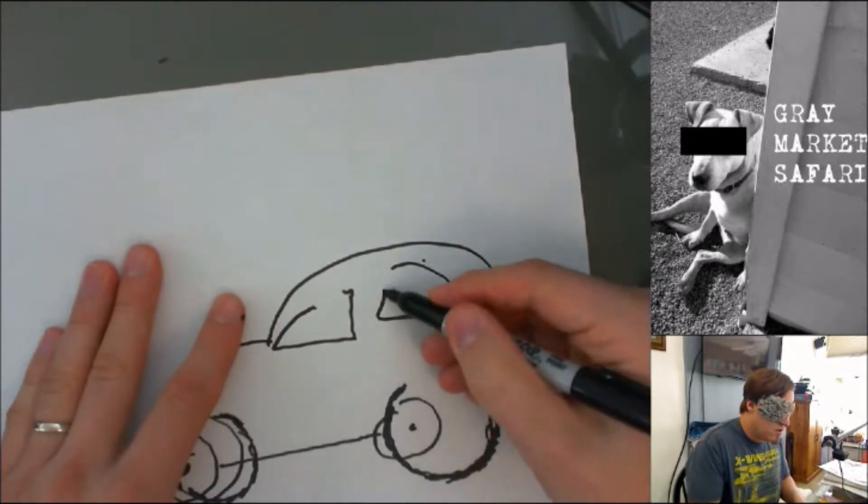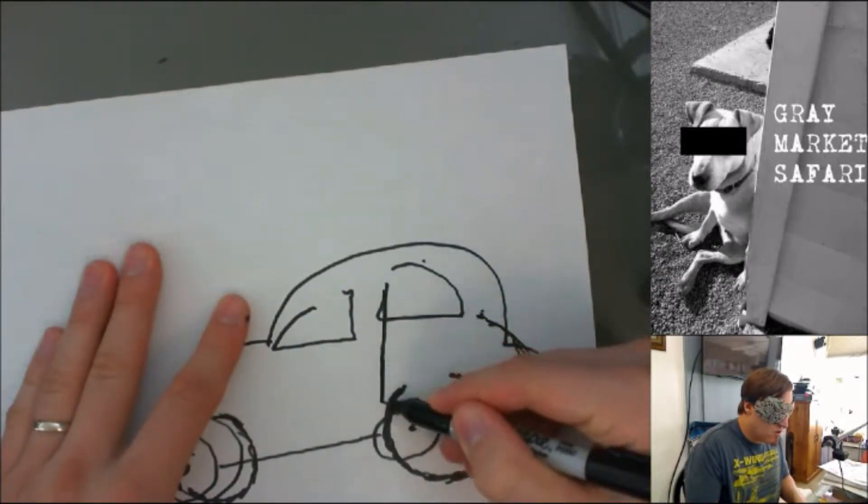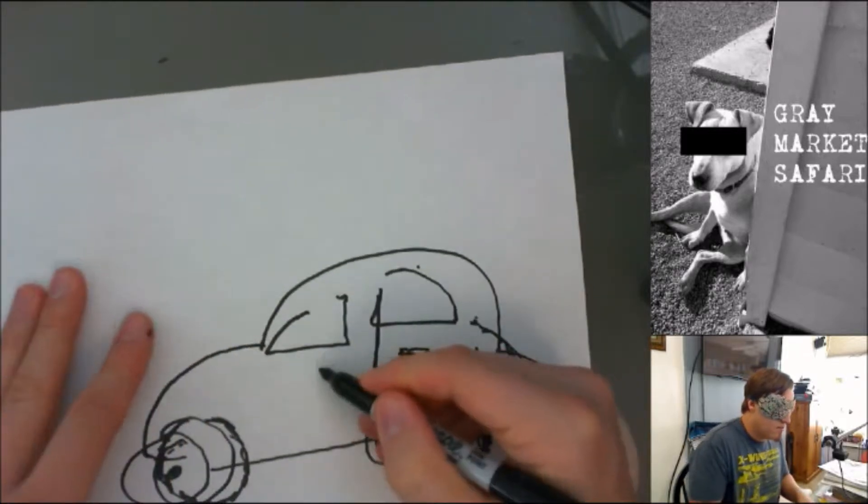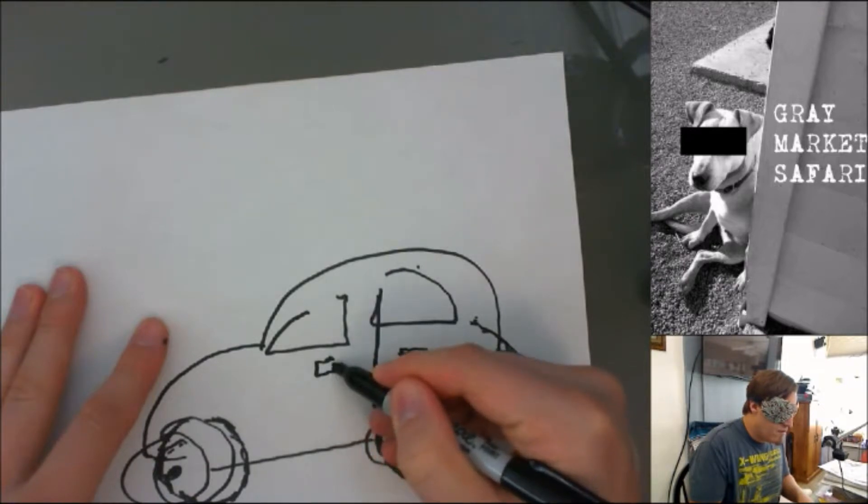Okay, everybody knows this is a car. We gotta add in a car door. Right there. You gotta have that outline. Car door handle. Another car door handle for the back.